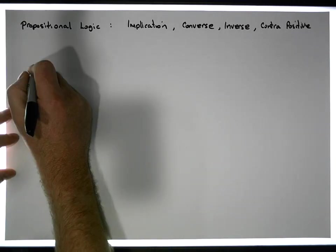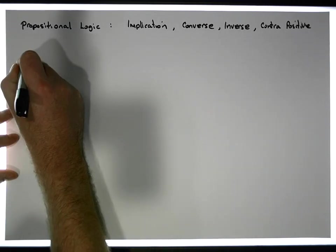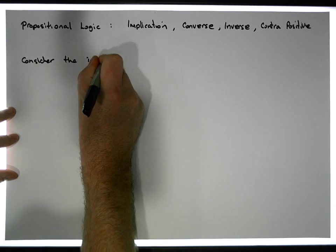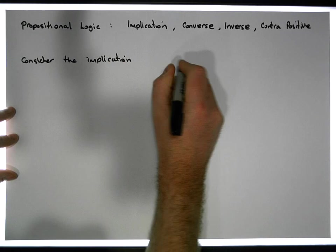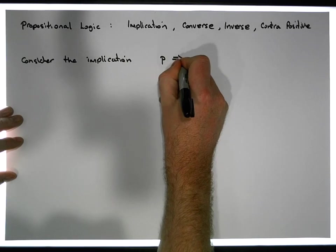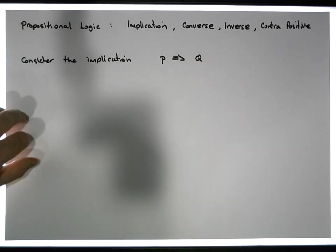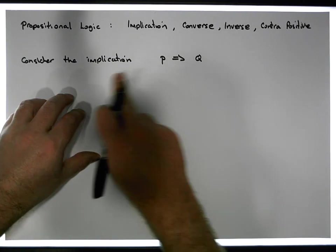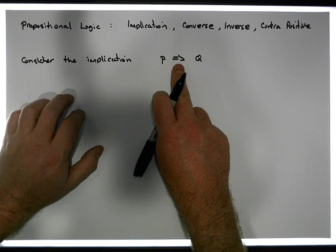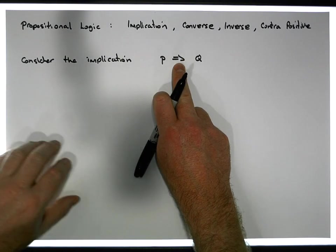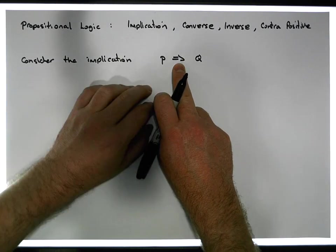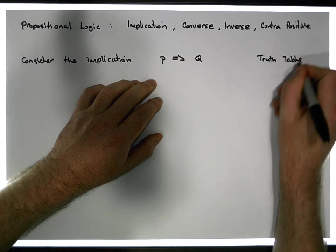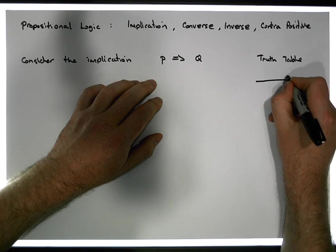So let's consider the implication p implies q. This is just a straightforward implication where we have a premise and a conclusion. We know how this works because we've defined the rules associated with the implication. And just from a truth table perspective, let's just recap on this again.